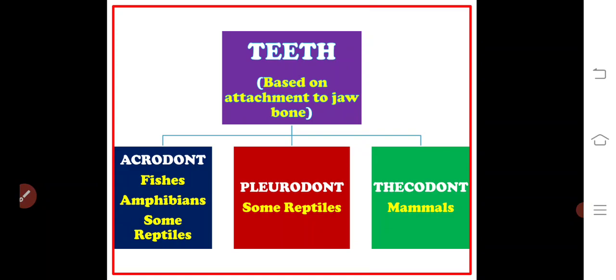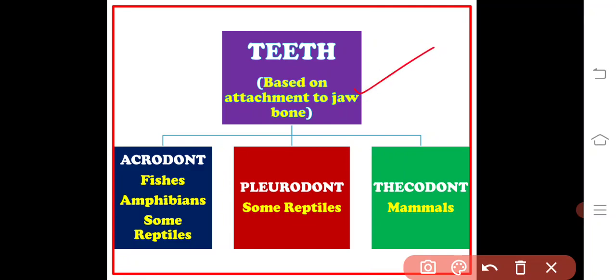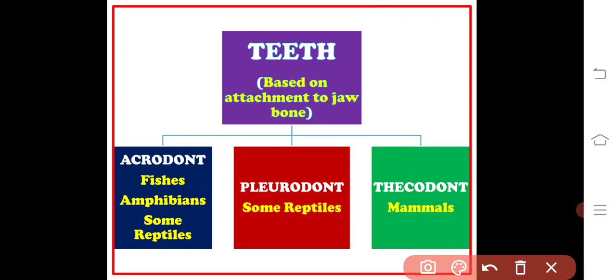There is a classification of teeth based upon attachment to the jaw bone. There are three groups: acrodont, pleurodont, and thecodont. In acrodont, the teeth are attached to the crest of the jaw bone — they have no roots and are attached to the edge of the jaw bone by fibrous membrane. Best examples are fishes, amphibians, and some reptiles. In pleurodont, teeth are attached to the sides of the jaw bone, touching the bone only with the outer surface of the root — found in some reptiles.